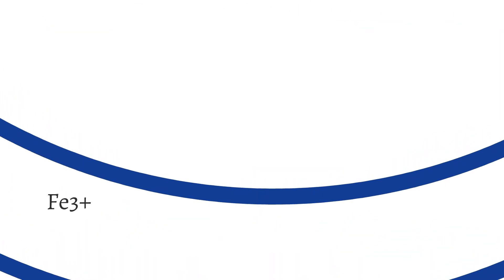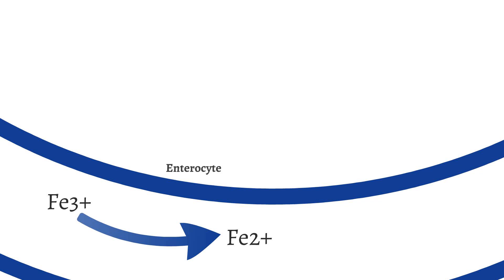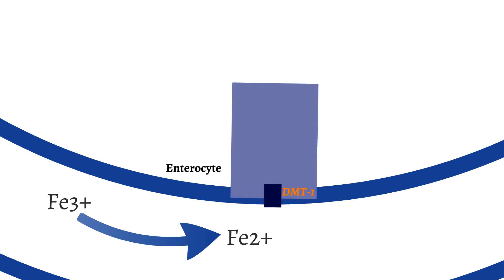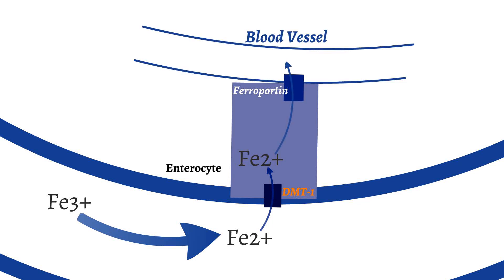Dietary iron is in the ferric 3+ state and is converted to the ferrous 2+ state. A transporter called the divalent metal transporter 1, or DMT-1, shuttles the ferrous ion from the duodenum into the cell. Within the enterocyte, which is a cell that lines the duodenum, ferroportin on the basal side of the enterocyte shuttles the ferrous iron into the bloodstream. On the other hand, if your body has enough iron, the ferrous iron is bound to ferritin and remains within the enterocyte.